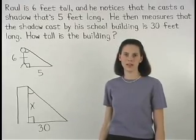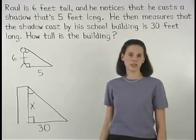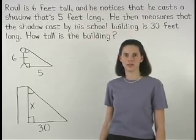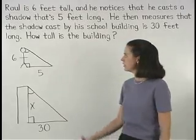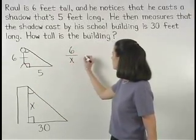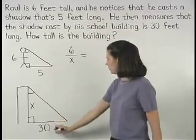And remember that if two triangles are similar, then the lengths of the corresponding sides are in proportion. So we can set up the proportion 6 is to X as 5 is to 30.